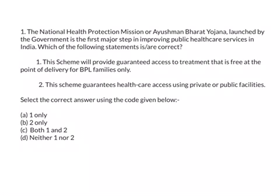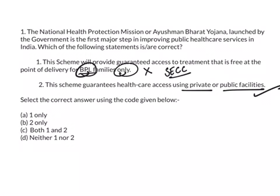The first question is about the National Health Protection Mission or Ayushman Bharat Yojana. The scheme provides guaranteed access to treatment free at point of delivery — but not for BPL families only. The data is taken as per socio-economic and caste census, and it is eligible for others also, so that statement is wrong. The scheme guarantees healthcare access using private or public facilities, which is correct. So only statement two is correct — the answer is B.